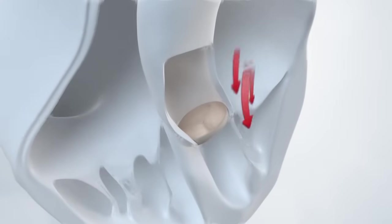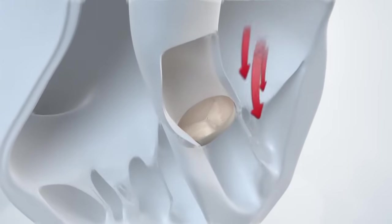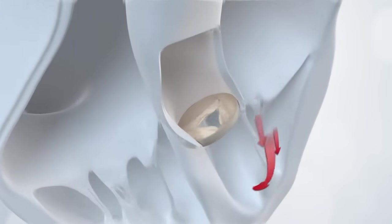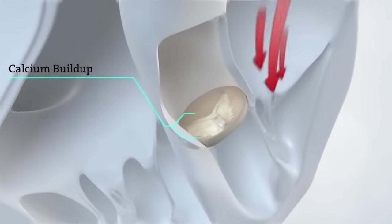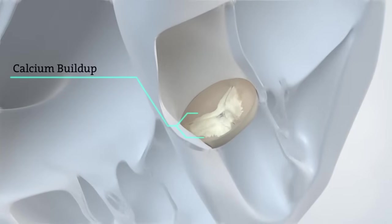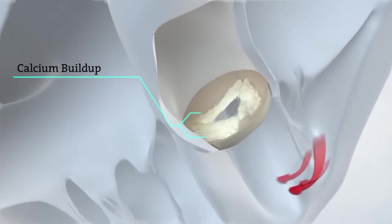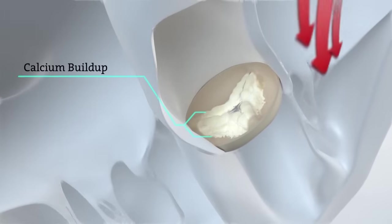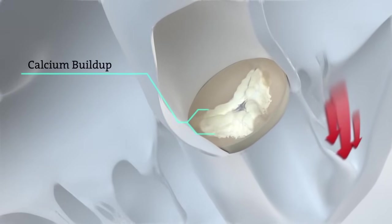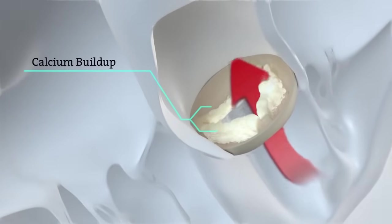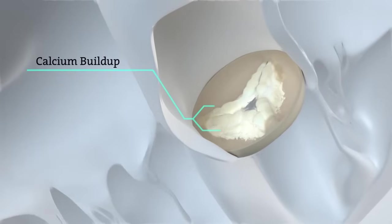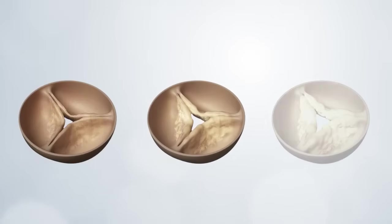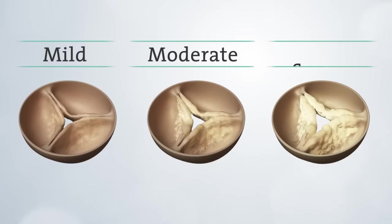It's important to know that if you have aortic stenosis, your aortic valve narrows due to calcium buildup. This prevents the valve from fully opening, which blocks blood flow from your heart to the rest of the body. As a result of the reduced blood flow, the body does not get the oxygen it needs, which can lead to symptoms. Aortic stenosis is a progressive disease, which means it gets worse over time.